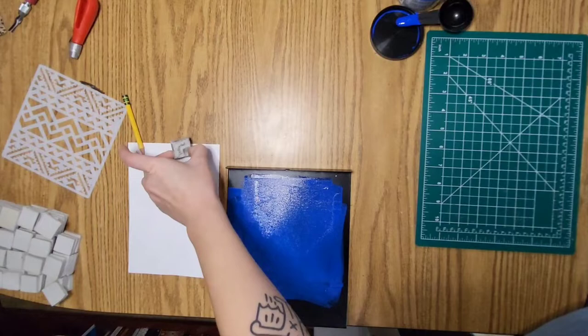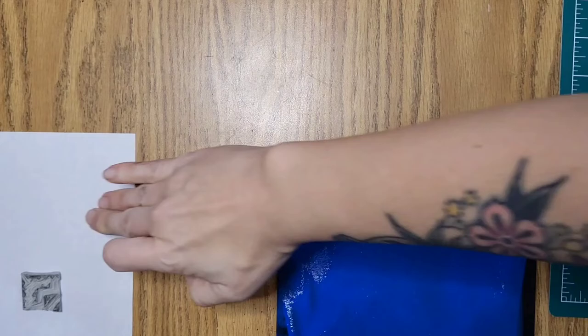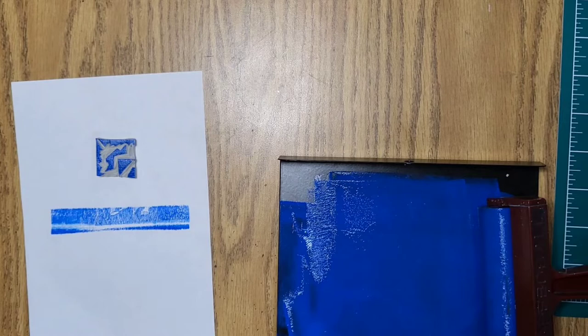And then have a piece of scrap paper that you can put your block onto. This will save you a lot of time cleaning up when it is time to do that. So take your brayer, roll the ink onto your rubber stamp.